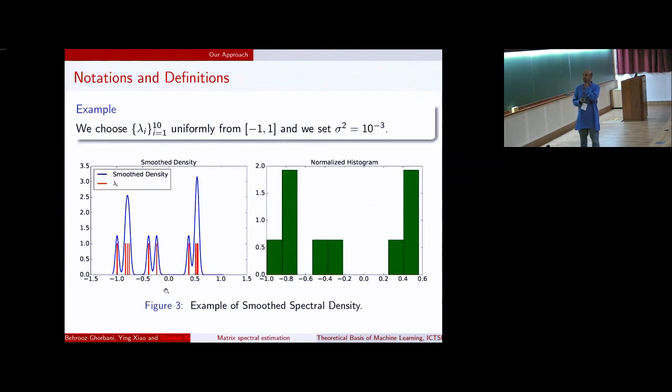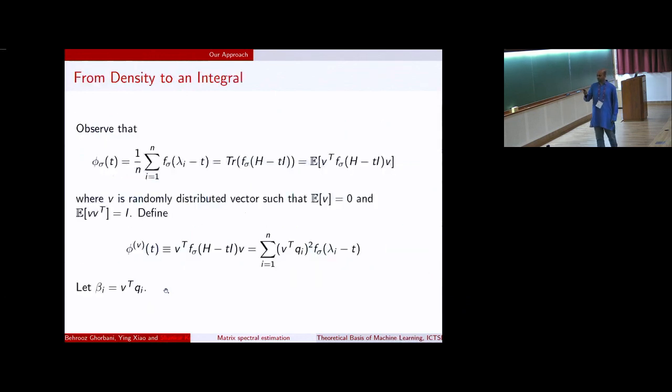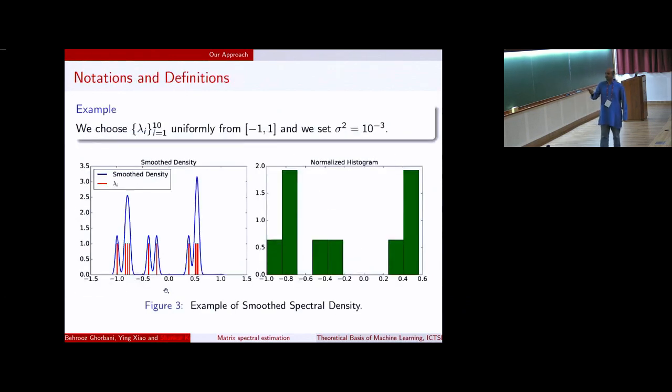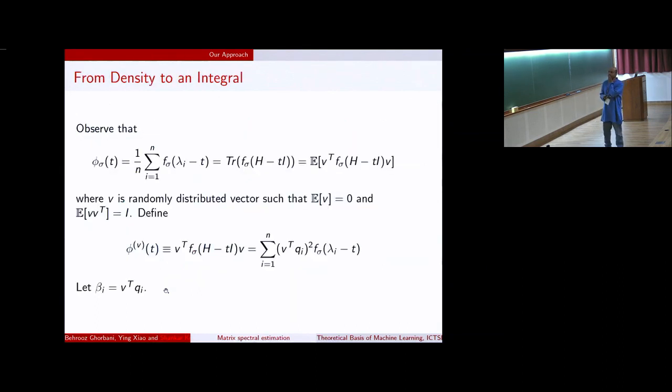This is just to give you a mental picture for what we'll be computing. This is like a very toy example where we have some eigenvalues between minus one and one, the red lines. And the true spectral density looks like the blue curve. So this is what you'll see in plots that I'll show later on. And this is in some sense close to your histogram estimation.